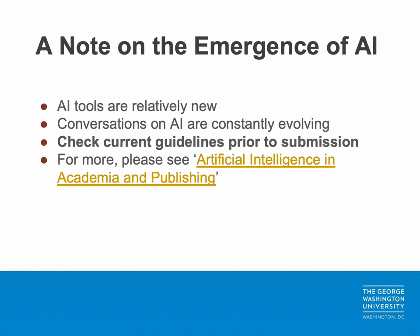Before diving into the first section, I want to make a quick note on the emergence of AI, specifically how it relates to scholarly publishing. This slide was inspired by a similar slide from Ray Punn's presentation on using ChatGPT with library instruction. In short, generative artificial intelligence tools such as ChatGPT and future AI models are emerging resources, and the discussion surrounding the appropriate use of these tools is constantly evolving. The information presented in this video may no longer be applicable in a few months or within a year or two. If you are using an AI tool during your research, please review current submission guidelines from your institution or targeted journal to ensure you are following the accepted standards and rules.